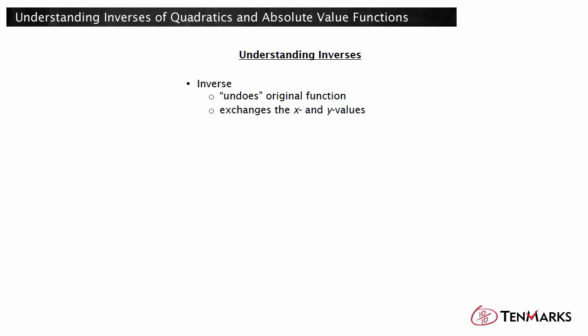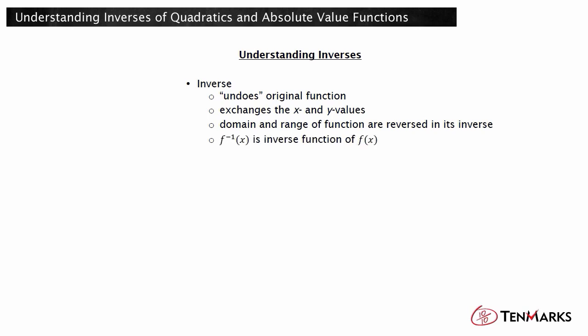The domain and range of a function are reversed in its inverse. For example, if the point is on a function, then the point will be on the inverse of the function. The inverse function is usually notated by using an exponent of negative 1. So f to the negative 1 of x means the inverse function of f, or simply f inverse.